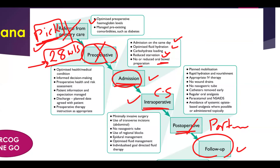During the caesarean section, there is no minimally invasive surgery — we use a transverse incision. The Joel-Cohen incision is preferred as it results in better outcomes, less post-operative fever, less hospital stay, and good healing. No nasogastric tube is needed. Use regional anaesthesia — epidural or spinal — instead of general. Optimize fluid management and keep the patient warm during the caesarean section using heat blankets, with individualized goal-directed fluid therapy.